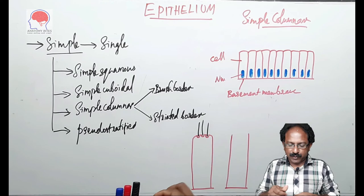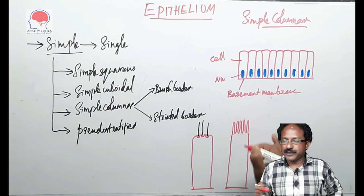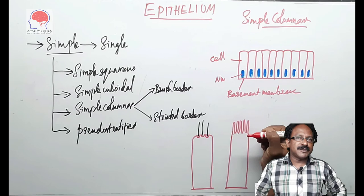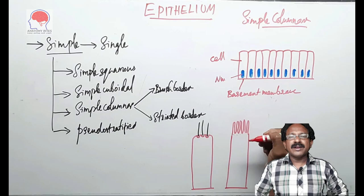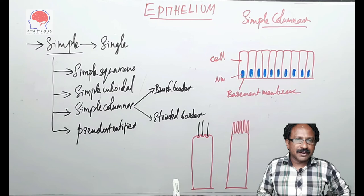And how does it differ from that of the striated border? These are fine microvilli projecting on the surface. The main purpose of this microvilli projecting onto the surface is to increase the surface area and this kind of columnar cell is seen where they need more absorption, like in the small intestine or in the gallbladder.